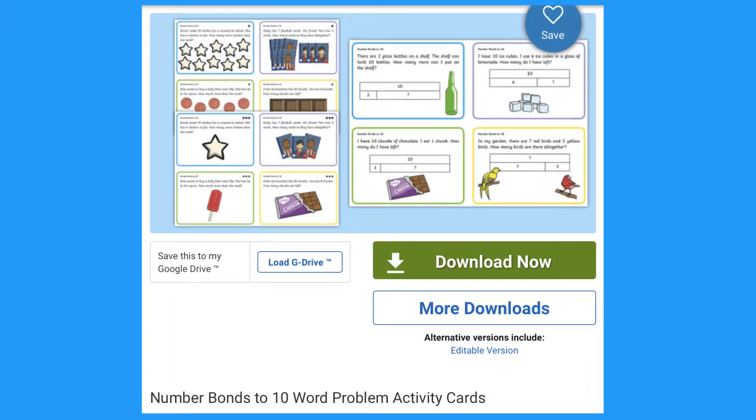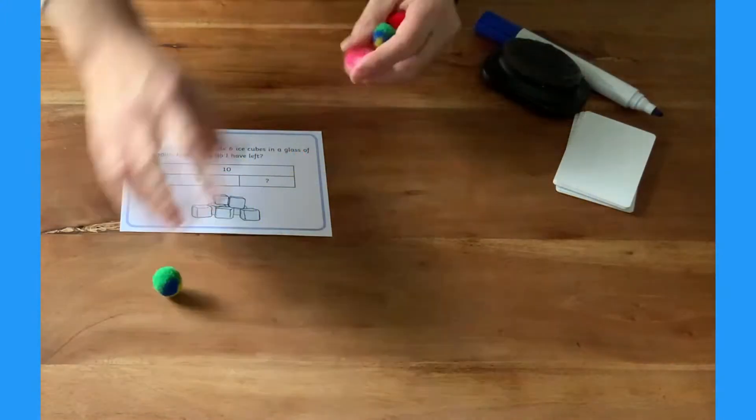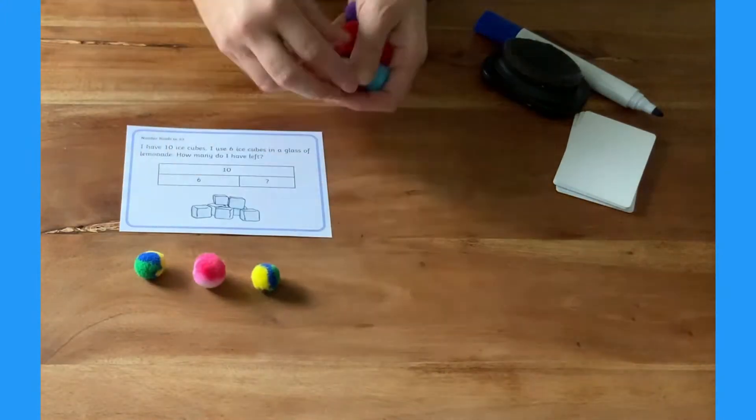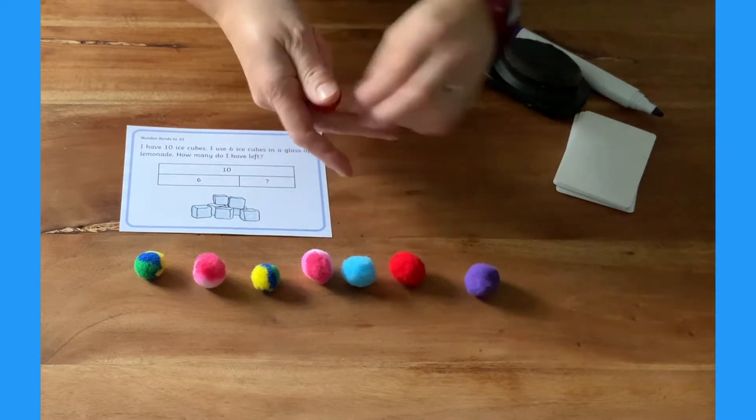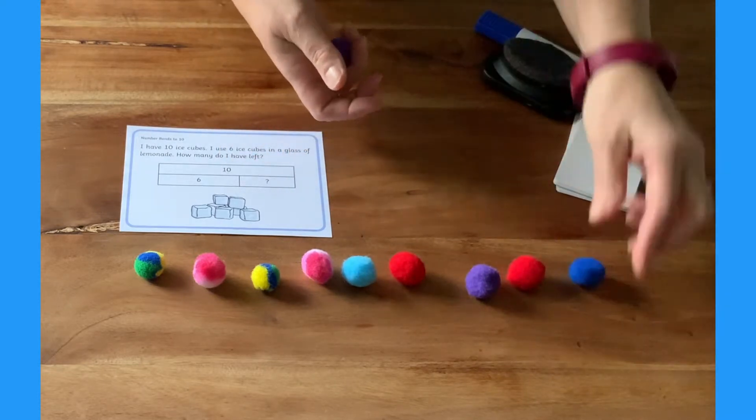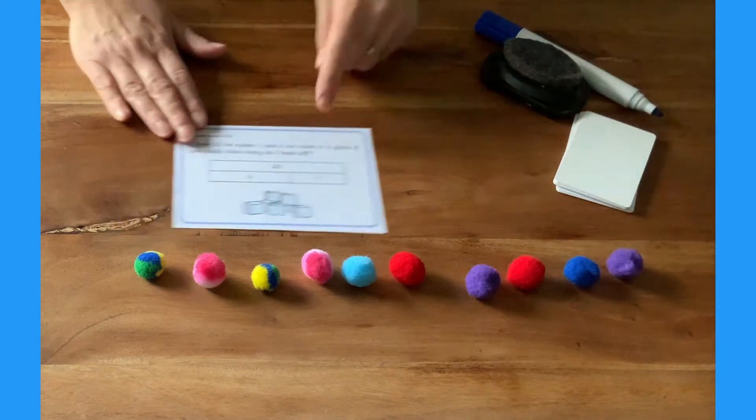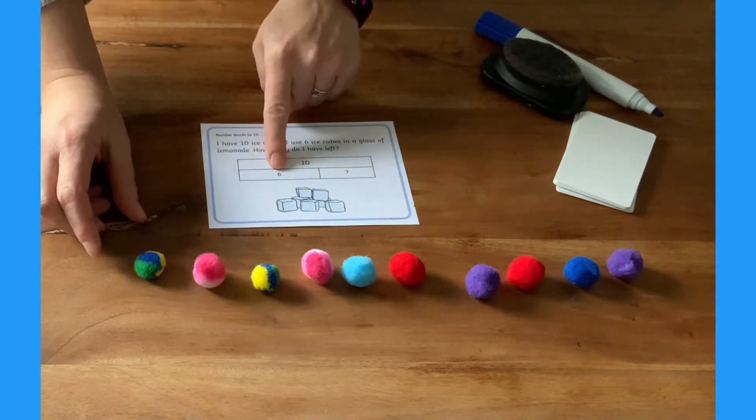Let's look at these word problem cards. It is helpful if children use practical objects to represent the word problem. They can start by counting out 10 pom-poms. I have 10 ice cubes. I use 6 ice cubes in a glass of lemonade. How many do I have left?